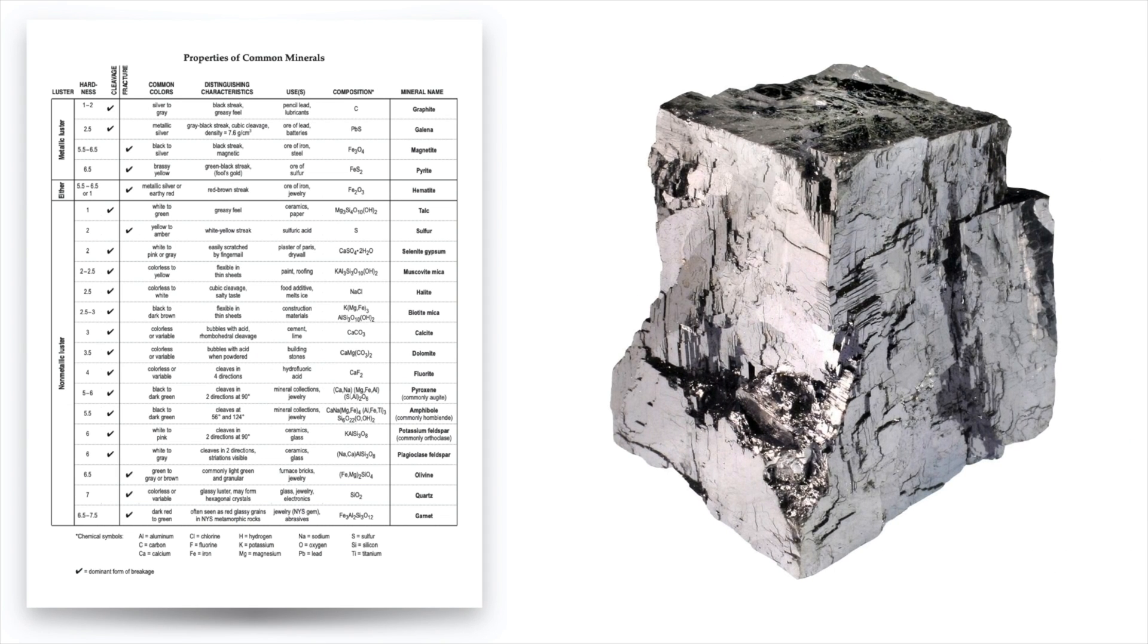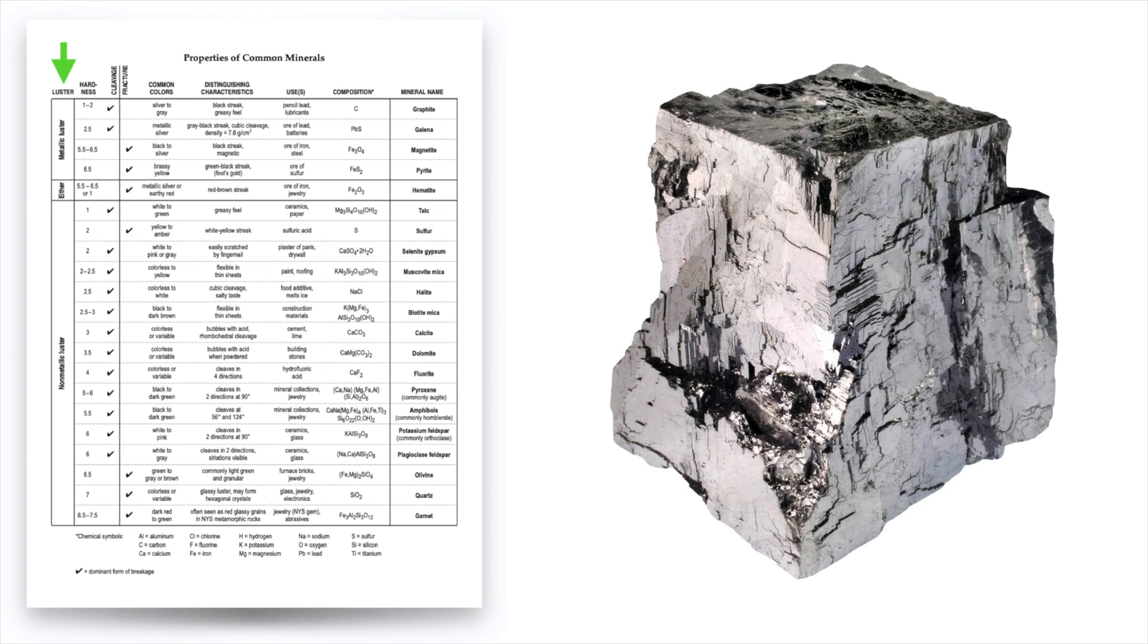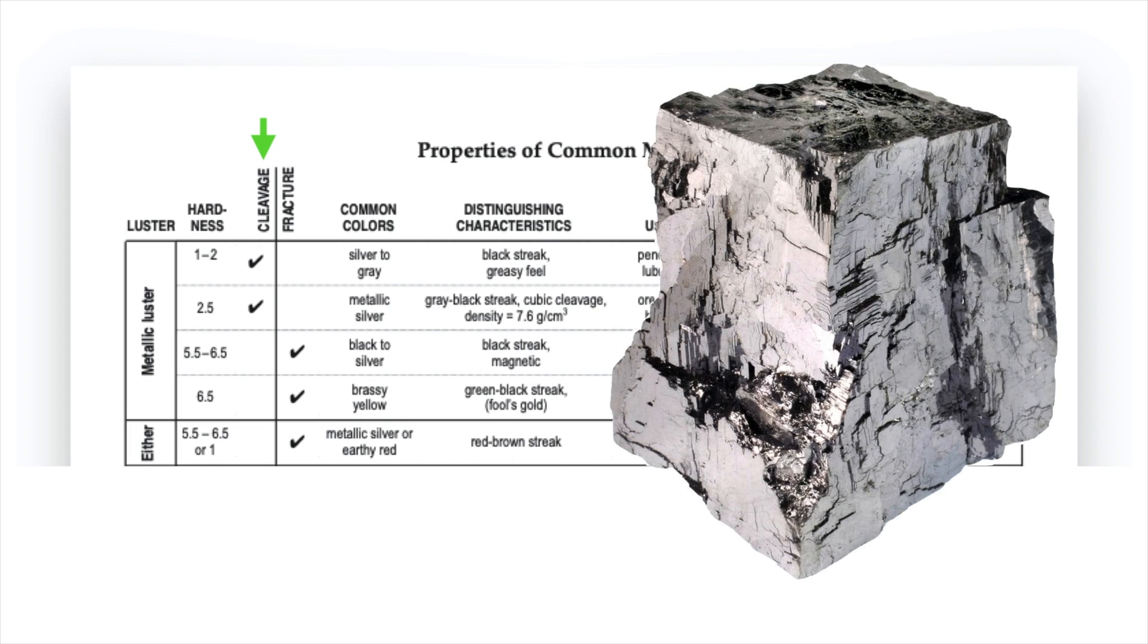So the first thing I like to look at is luster because it's generally very obvious you don't have to test anything. You basically just look at the sample and you're asking yourself, does this look like metal or not? Is it metallic or non-metallic? And clearly this sample has a metallic luster. It's got this shiny kind of sparkly silver appearance. So right off the bat I can eliminate the entire bottom of the chart by looking at the luster. So now I'm down to five minerals just with one simple characteristic.